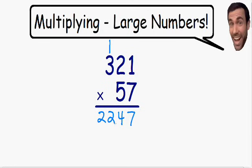This time we do have enough space for two digits because there are no numbers left on top to be multiplied. Now let's do the same exact thing with the other number on the bottom, the number 5. We need to multiply this number 5 with all of the numbers on top. One thing you should keep in mind is that the 5 is in the tens place. Because this 5 is in the tens place, we need to start in the tens place. So I'm going to put a 0 in the ones column.